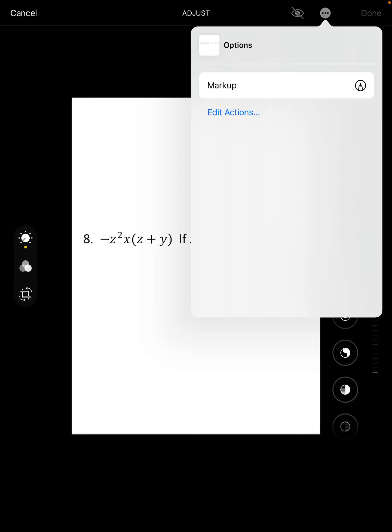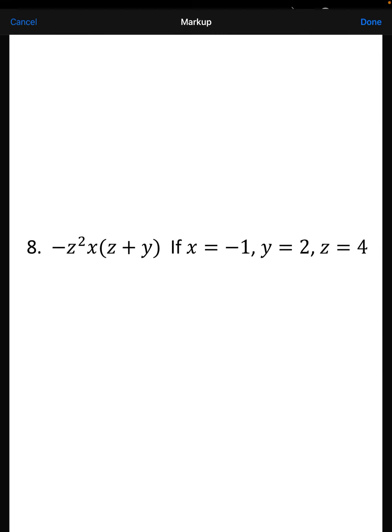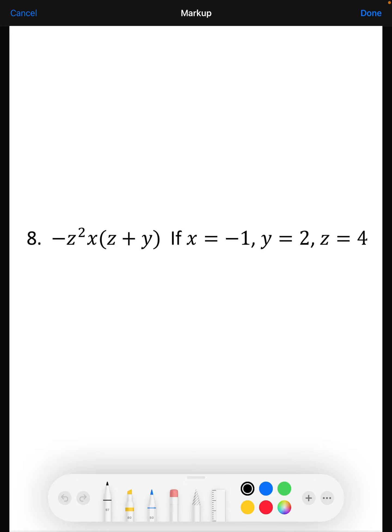How we're going to do that is we need to make sure that everywhere there's an x, we put negative 1; everywhere there's a y, we put a 2; and everywhere there's a z, we put a 4. So everywhere there is an x we're going to put negative 1, everywhere there's a y we're going to put a 2, and everywhere there's a z we're going to put a 4.